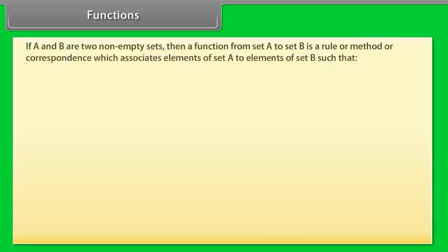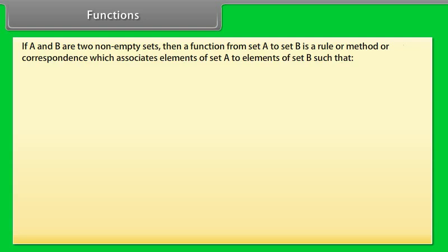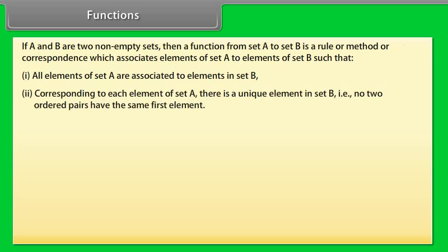Functions: If A and B are two non-empty sets, then a function from set A to set B is a rule or method or correspondence which associates elements of set A to elements of set B such that: (1) all elements of set A are associated to elements in set B, and (2) corresponding to each element of set A, there is a unique element in set B — that is, no two ordered pairs have the same first element.